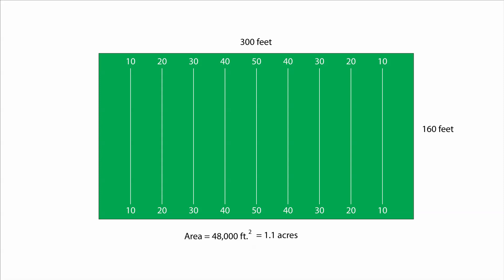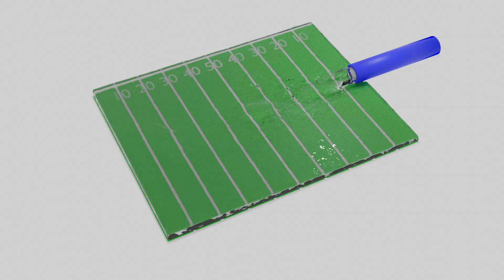The area of play on an American football field is about 1.1 acres, or 47,916 square feet. If we could fill that area with water one foot deep, we'd have a volume of 1.1 acre feet.